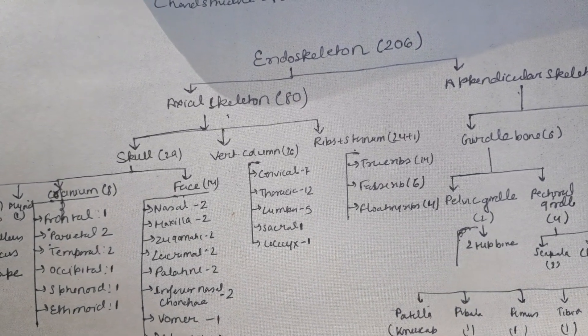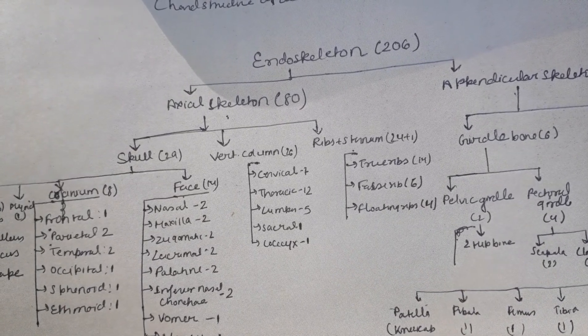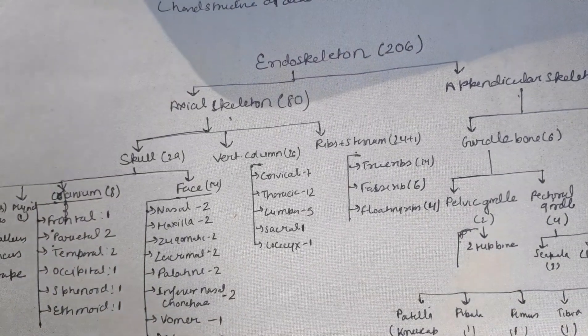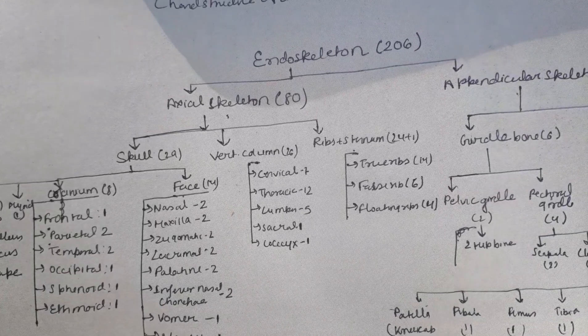Ribs - you all know we have seven pairs of true ribs, which include 14, three pairs of false ribs, which include 6 ribs, and two pairs of floating ribs - that is 11th and 12th both are floating ribs - plus we have one sternum.